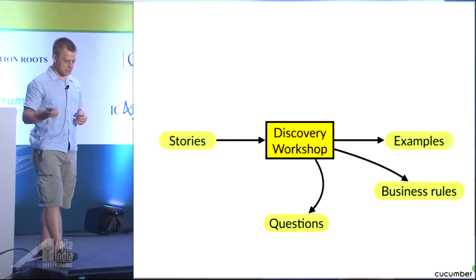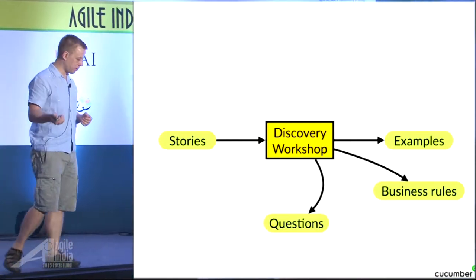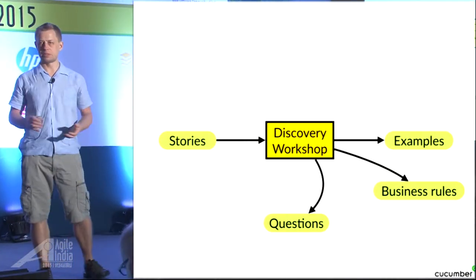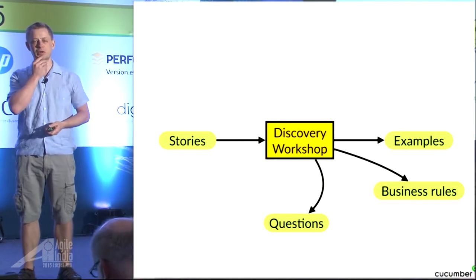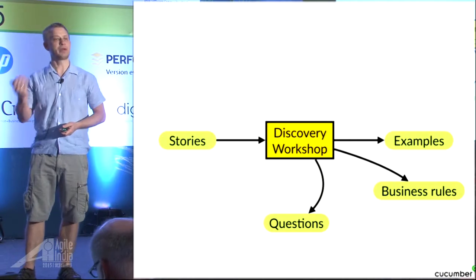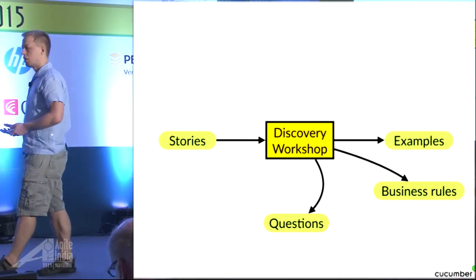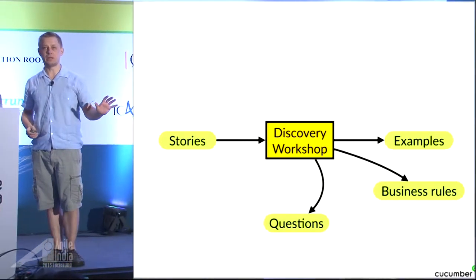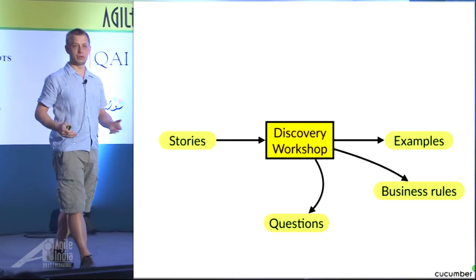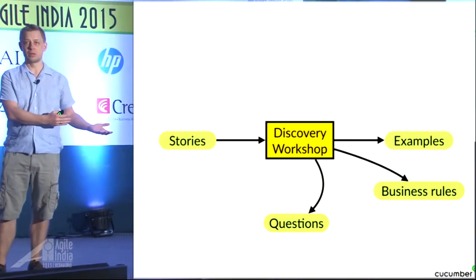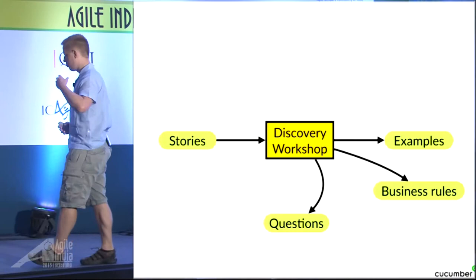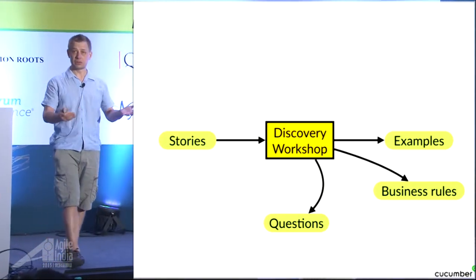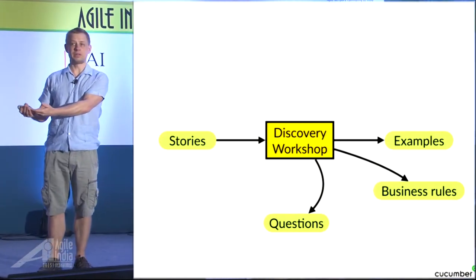The other thing that you come out of these meetings is questions. Every now and then, the developer will ask the product owner about something and the product owner goes, 'That's a really good question. I don't know. Let me try and find out.' And then you can just park it. What you've just done is promote an unknown unknown to a known unknown that the BA or the product owner or the domain expert can go back and analyze and find out about before you start writing the defective code.